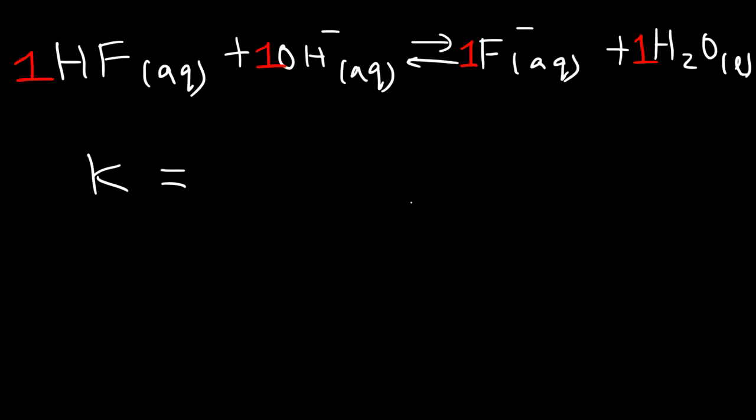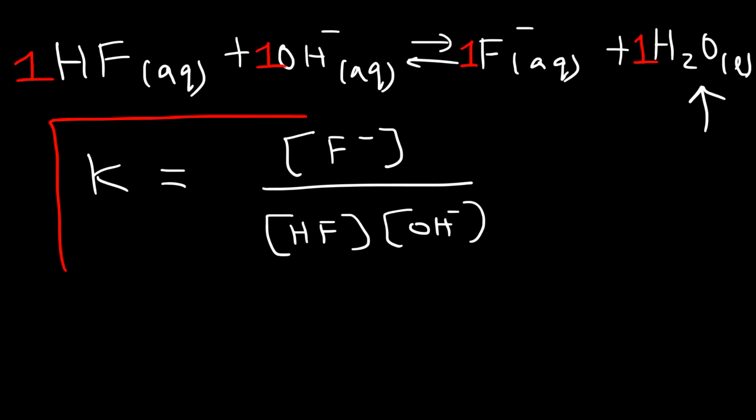So K is going to be the products divided by the reactants. Now water is in a liquid state, so we cannot include it in the equilibrium expression. So the only product that we have is the fluoride concentration. And on the left, we have the concentration of HF and the concentration of hydroxide. Now the coefficients are all 1, so the exponent is 1. So we could leave the answer like this.